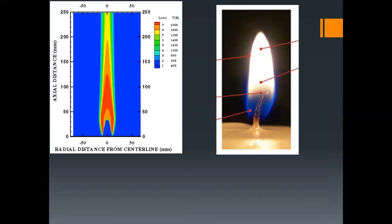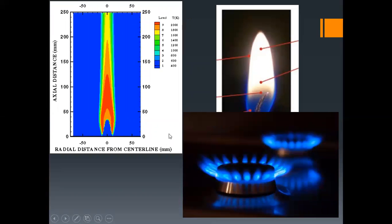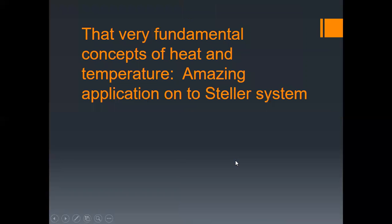A great example is the flame of a candle. Different parts of the flame have different colors — closest to the wick it's dark blue, then light blue, and then a reddish-yellowish color. Another example is a gas burner: the blue color flame has high energy. When talking about luminosity, the red color may look bright, but energy-wise the blue color contains higher energy. This fundamental concept of heat and temperature has amazing applications in the stellar system.